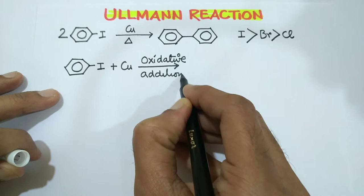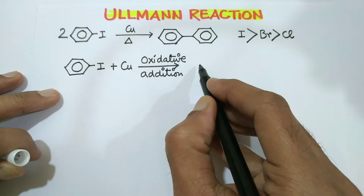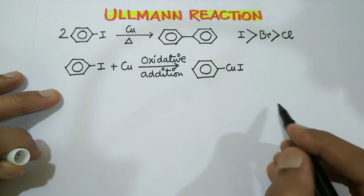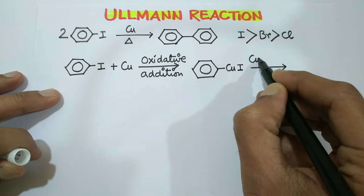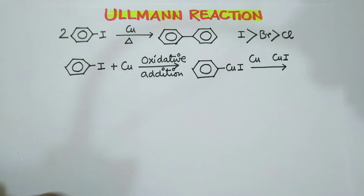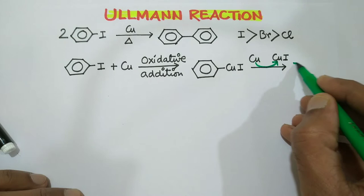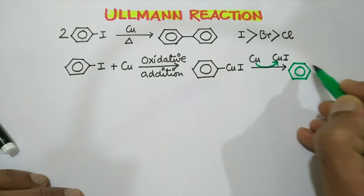It forms unstable organo-copper type of intermediate. Cu-I, then copper to copper iodide formation by the replacement of this iodide and formation of organo-copper as intermediate.